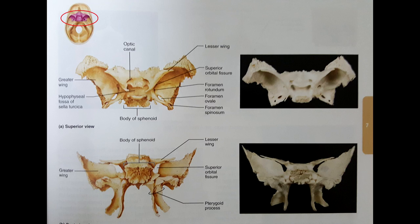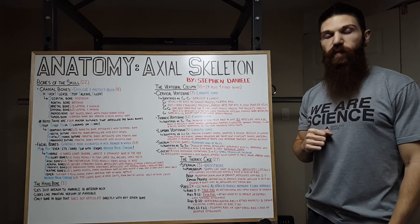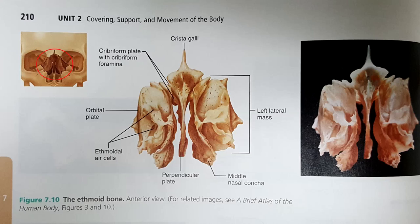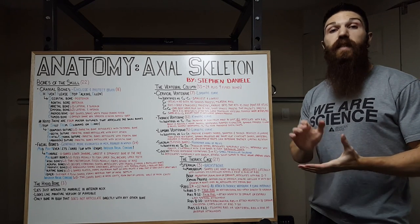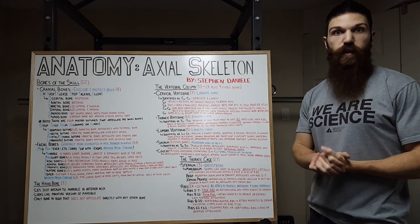Our sphenoid bone is a bat-shaped bone that spans the width of our cranial fossa. And finally, we have our ethmoid bone. It is a complex shape between the sphenoid and nasal bones. It is also very deep.